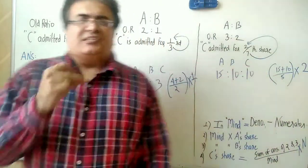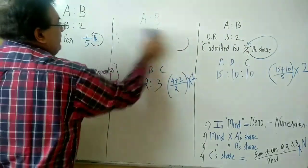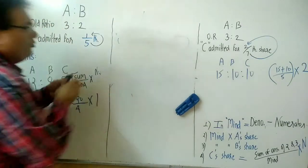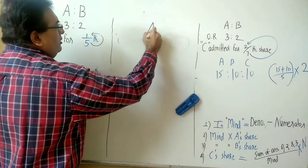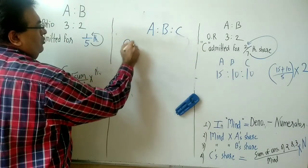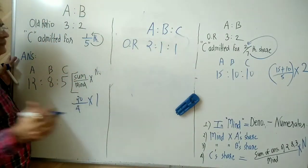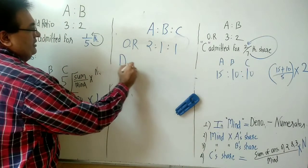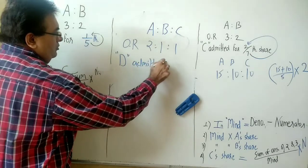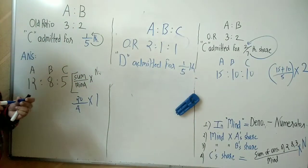You get the answers in a flash! A student asks: what if there are three old partners? No problem. Example: A, B, C in old ratio 2:1:1, and Mr. D is admitted for 1 upon 5.